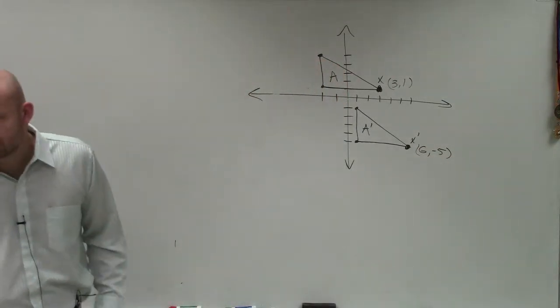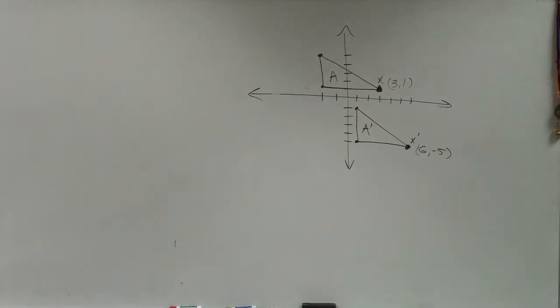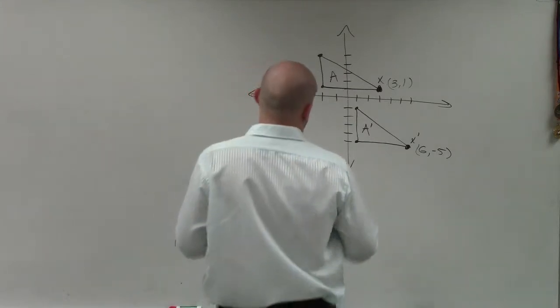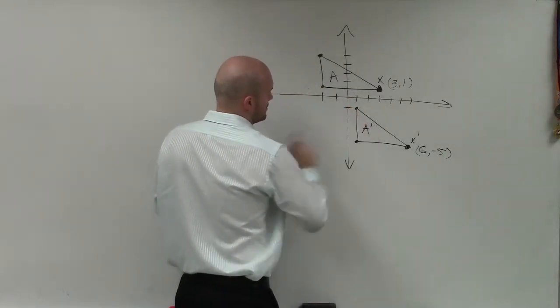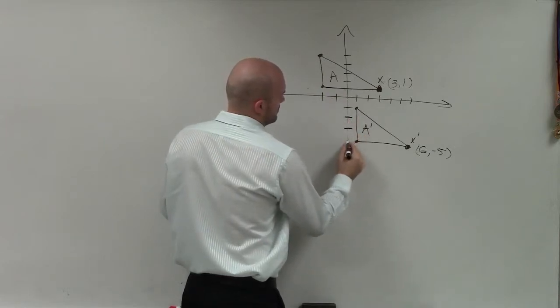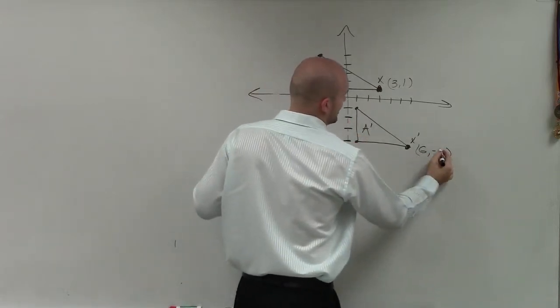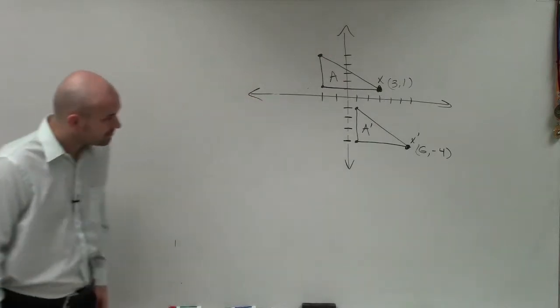Was that down to negative 5? Or is the point supposed to go to negative 4? 1, 2, 3, 4. It's supposed to go down to negative 4, isn't it? My apologies. It's supposed to be at negative 4. That was part of the problem.